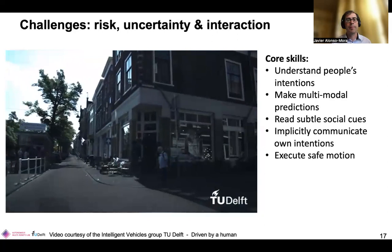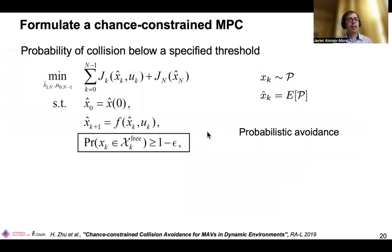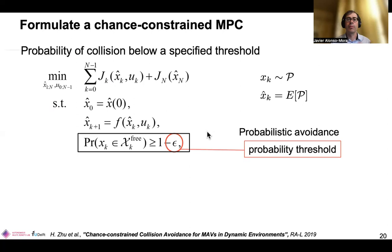Let's get started with the first challenge: modeling uncertainty. Uncertainty can arise from the trajectory we plan for our vehicle as well as from the environment — what will the other agents do? We start with the same MPC formulation, with a cost function discretized from the current time step k0 until the horizon N. The key constraints are for probabilistic collision avoidance: instead of saying the robot needs to avoid a collision, we now say the probability of being in a safe state needs to be greater than or equal to 1 minus epsilon at every time step.